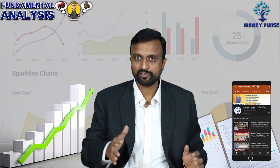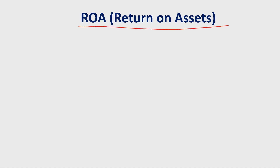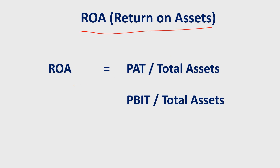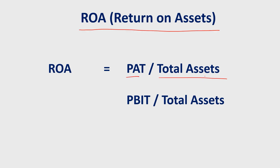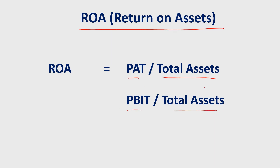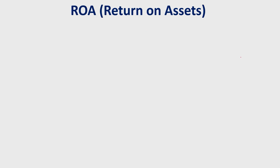We will next cover the return on asset ratio. If you want to understand how effectively a company uses its total assets to generate returns, the return on asset ratio tells you that. There are two different formulas — one using the profit after tax number — and you can choose the formula that suits the company report. Total assets is the denominator in this ratio.